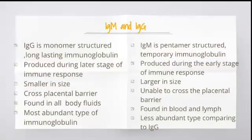The next is: difference between IgM and IgG. IgG is a monomer-structured, long-lasting immunoglobulin whereas IgM is a pentamer-structured, temporary immunoglobulin.